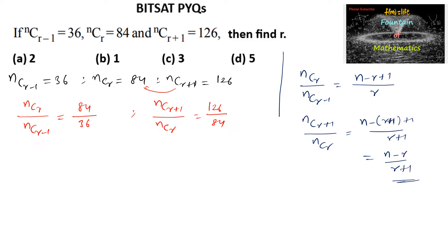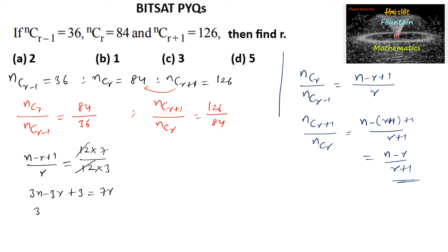Using the property, we write (N - R + 1) / R = 84/36, which simplifies as 12×7 over 12×3. Cross-multiplying: 3N - 3R + 3 = 7R, giving 3N - 10R = -3, or equivalently 10R - 3N = 3. Call this equation 1.